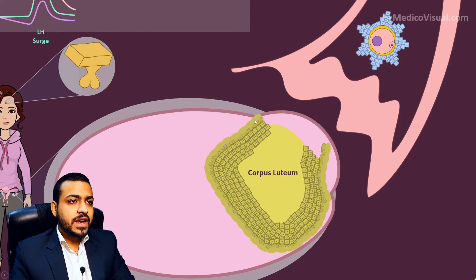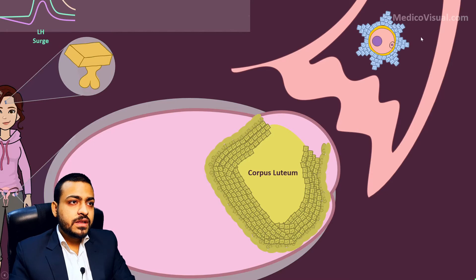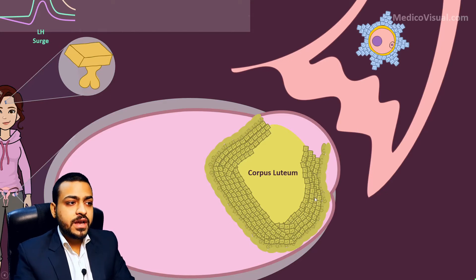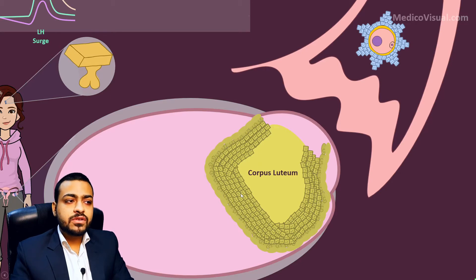Previously we had discussed the process of ovulation, in which the secondary oocyte was released into the uterine tube. The structure that remained behind was turned into the corpus luteum, and it started secreting progesterone.